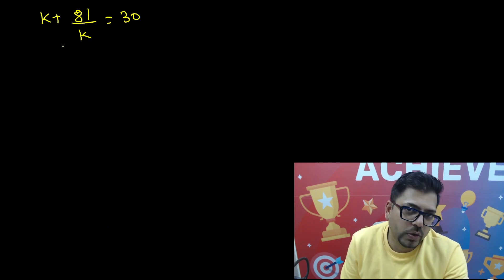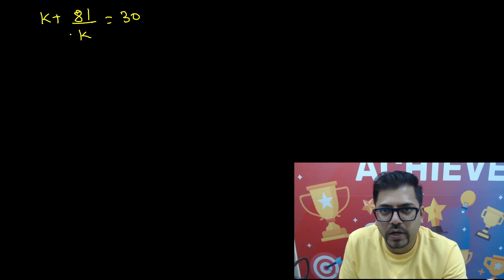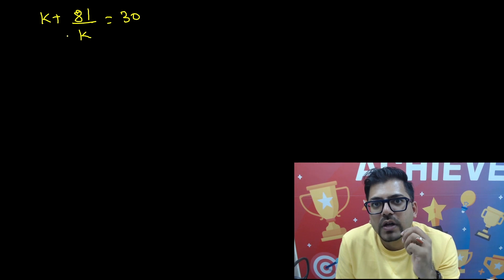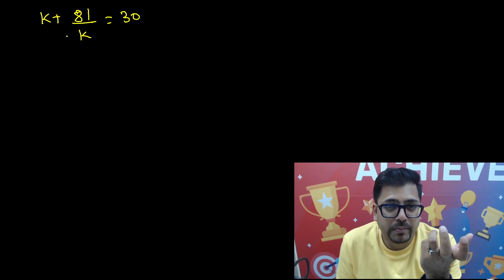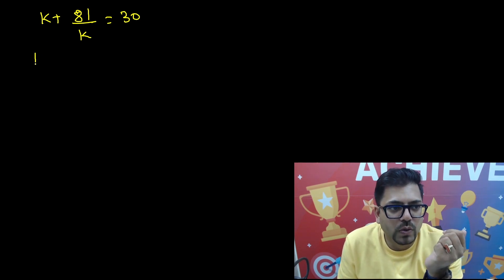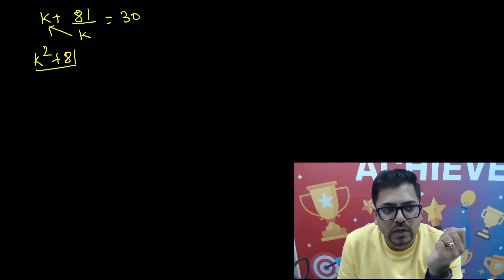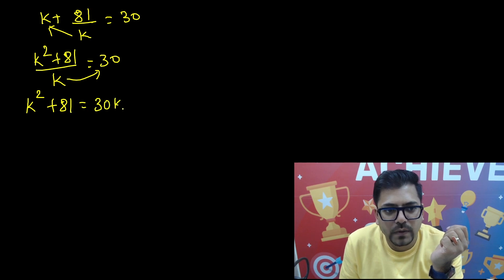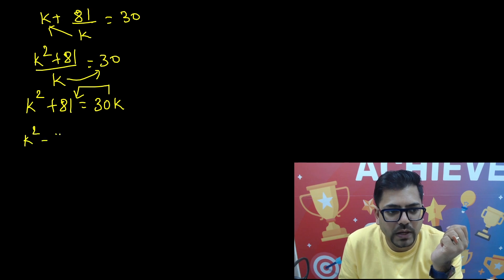This is now a simple quadratic equation. Taking LCM, we get k² plus 81, all divided by k, equals 30. Cross-multiplying gives k² plus 81 equals 30k. Moving 30k to the left-hand side: k² minus 30k plus 81 equals 0.